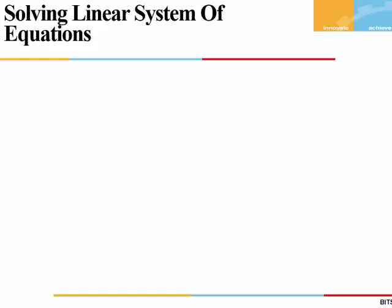Hi students, welcome back. In the previous video, we learned how to solve a system of equations using the Gauss elimination method, where we had reduced our augmented matrix to the REF form — the Row Echelon form. Here, we will study another method, the Gauss-Jordan method, for solving the system of equations. Let's see how this method is different from Gauss elimination.